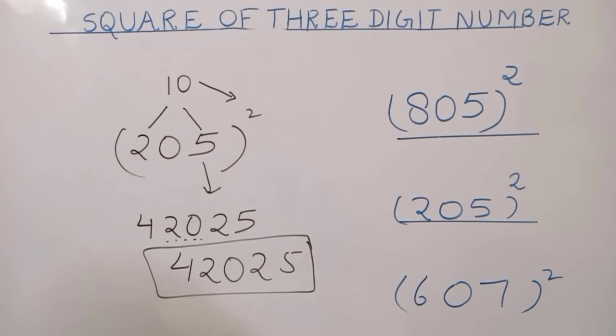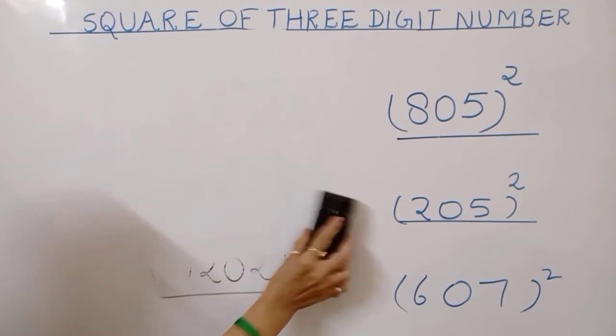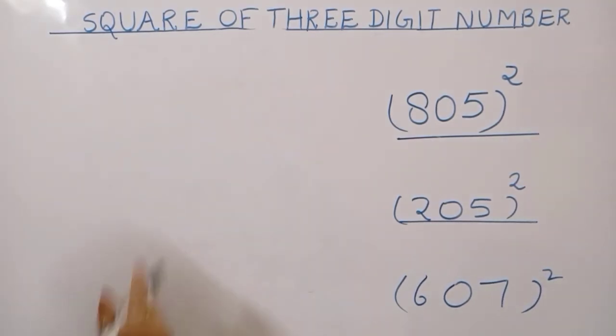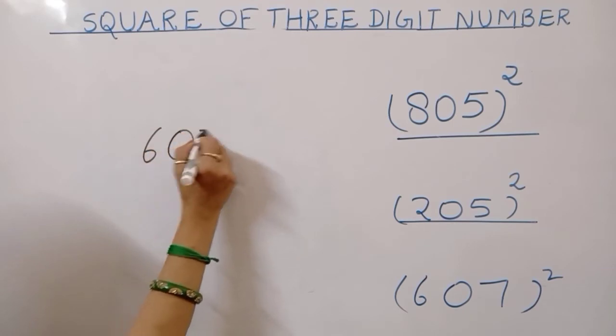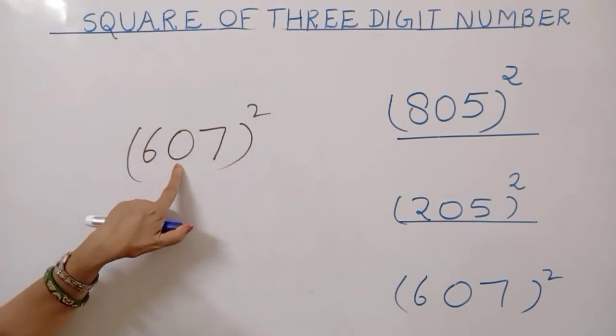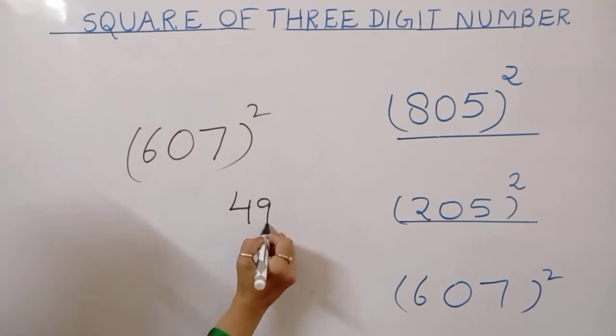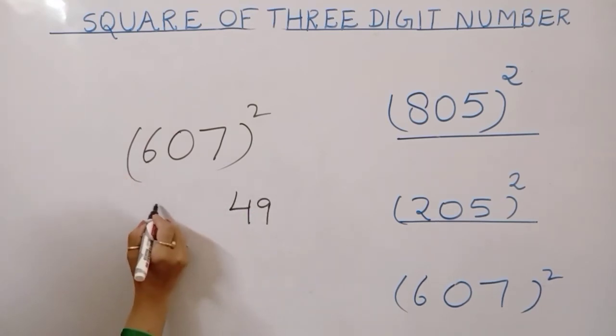Coming to our third question, square of 607. In this question, there is basic condition, presence of 0 in the middle. Now, 7 square, 49. 6 square, 36.